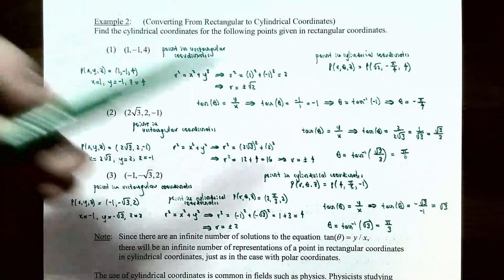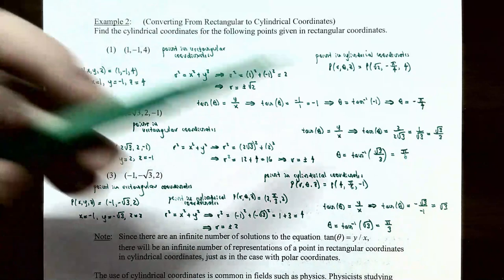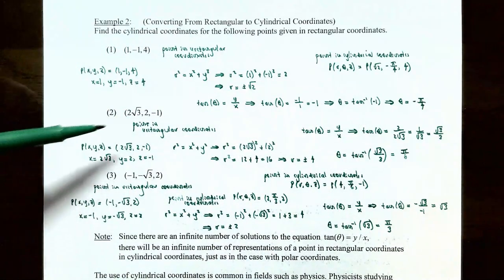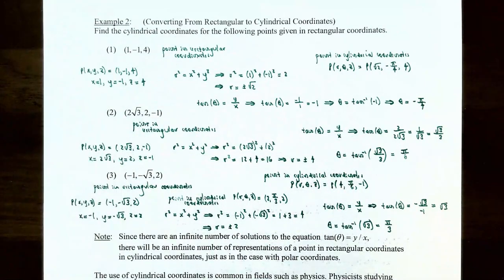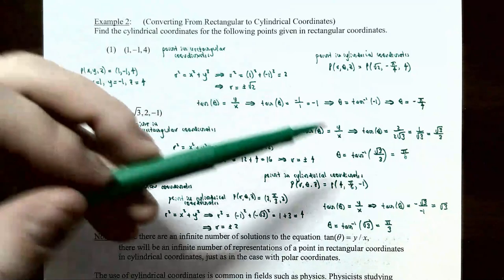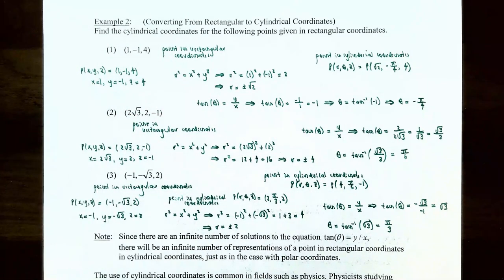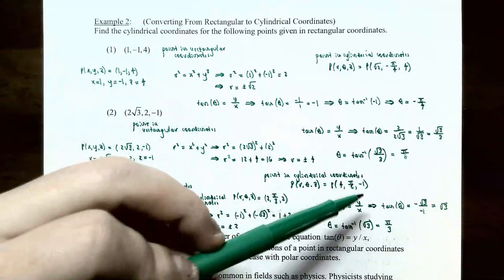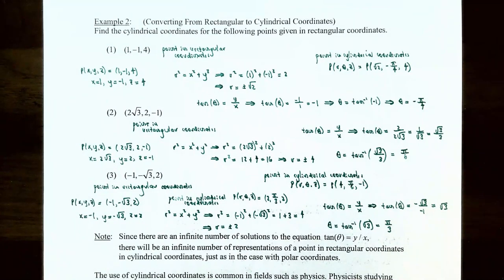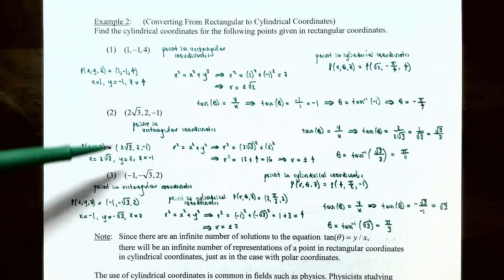To find theta, tangent theta equals y over x equals 2 divided by 2√3, which simplifies to 1 over √3, or rationalizing the denominator gives √3 over 3. So theta equals arctan(√3/3) equals π/6. With z equal to negative 1, the point in cylindrical coordinates is (4, π/6, −1). So (2√3, 2, −1) in rectangular coordinates is the same as (4, π/6, −1) in cylindrical coordinates.